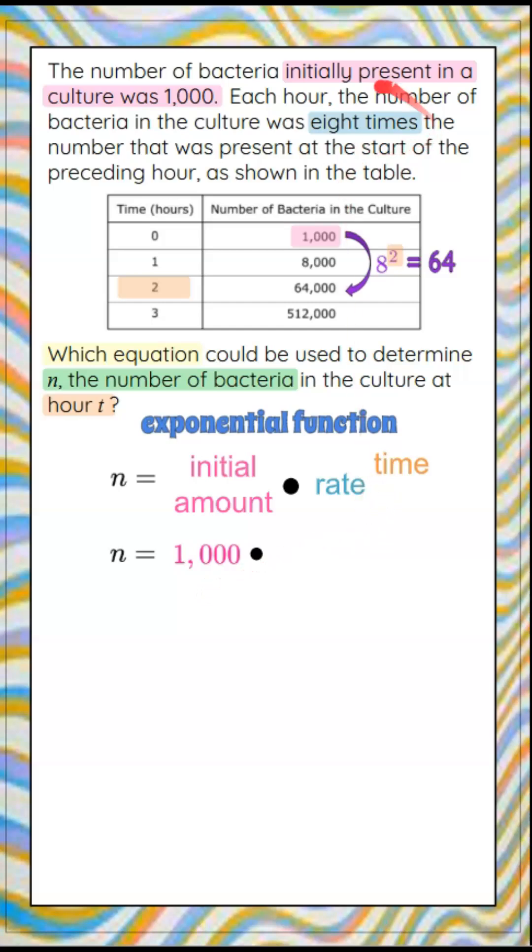Our rate was eight times. So our rate replaces our base of our exponent. Our power is eight. And what we want to leave as a variable is time. We're going to use T because we want to know for any hour T, not a specific hour.